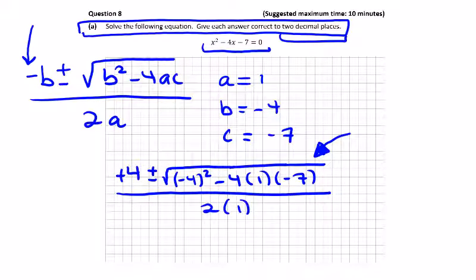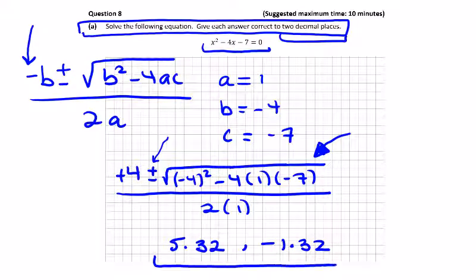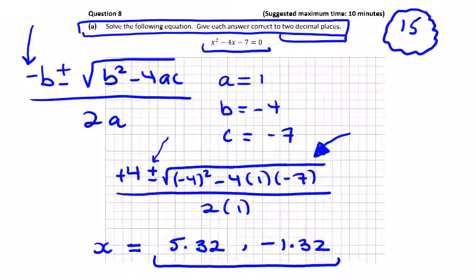Type it into your calculator with the plus sign, then with the minus sign, to get your two answers correct to two decimal places: x = 5.32 for the positive root and x = −1.32 for the negative root. The quadratic formula was worth 15 marks in total, so take your time with it.